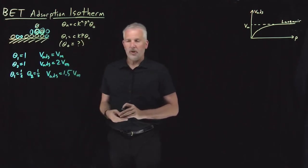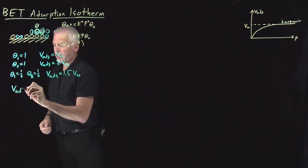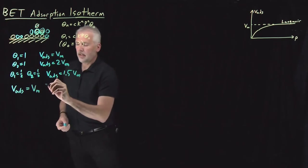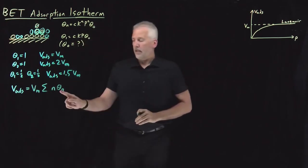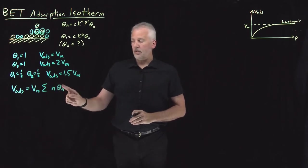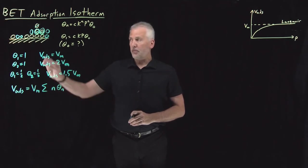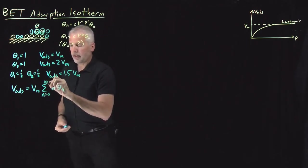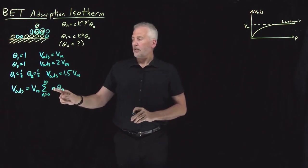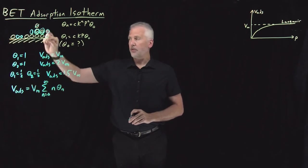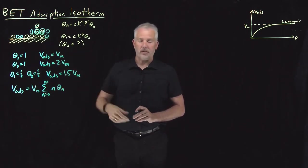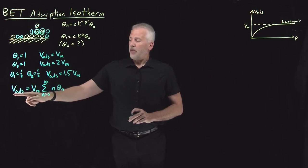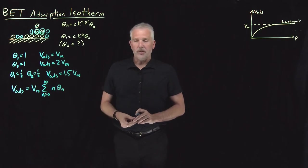What we're building toward with these examples is that the total amount of gas adsorbed onto the surface is the monolayer coverage multiplied by some number. That number is: for each layer, take the fraction of the surface covered by that many molecules, multiply by that number of molecules, and sum those values from no coverage up to infinite layers of coverage. This gives a general equation for how the adsorbed volume depends on the amount adsorbed into each layer.